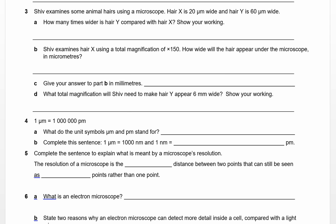Part B: Shiv examines hair X using a total magnification of times 150. How wide will the hair appear under the microscope in micrometers? He's looking at hair X, so hair X is 20 microns, 20 micrometers wide. We're going to multiply that by 150. That way we get to see how big it is. 20 multiplied by 150 is 3,000 micrometers.